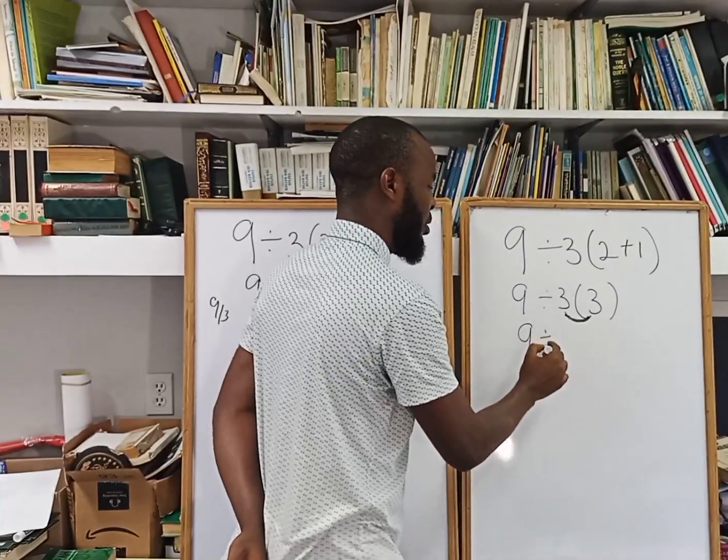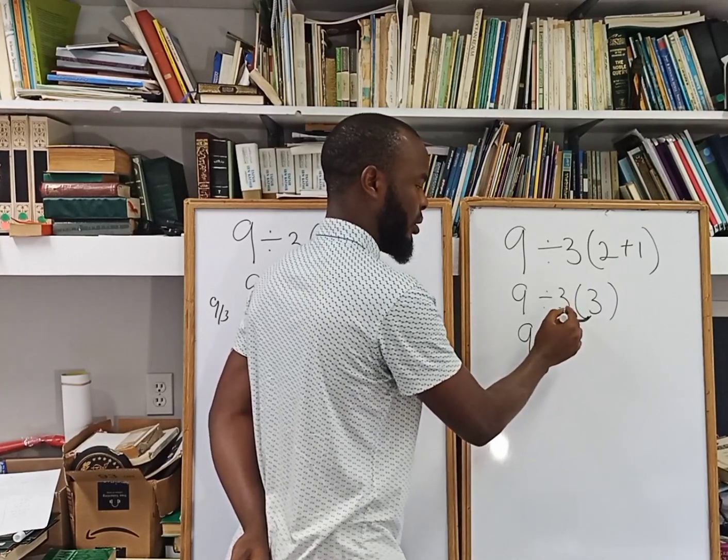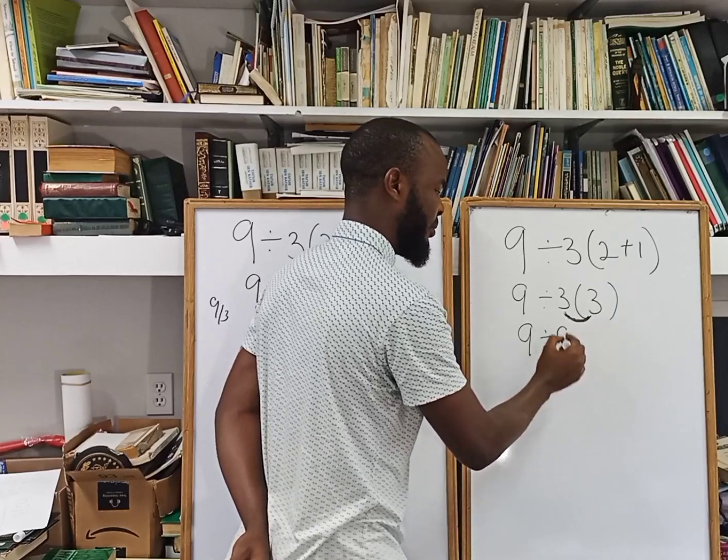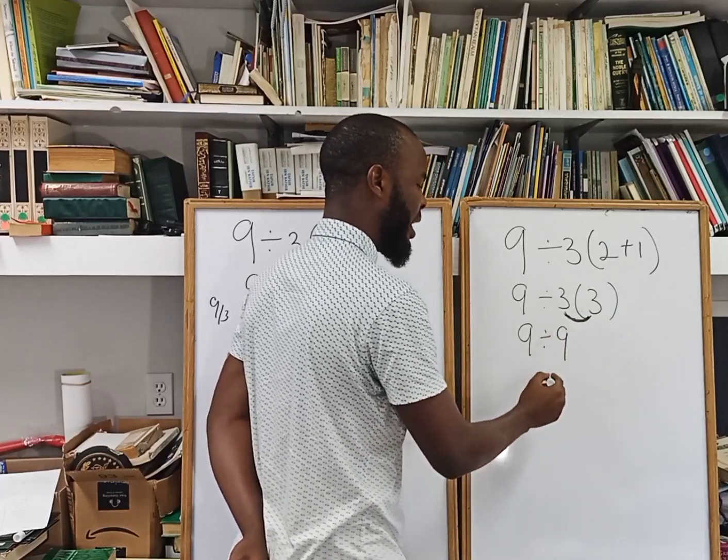You have 9 divided by, expanding or distributing 3 into this, you have what? 9. So 9 divided by 9 gives 1.